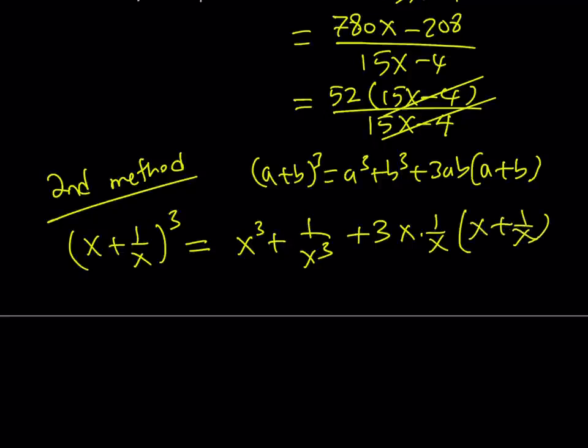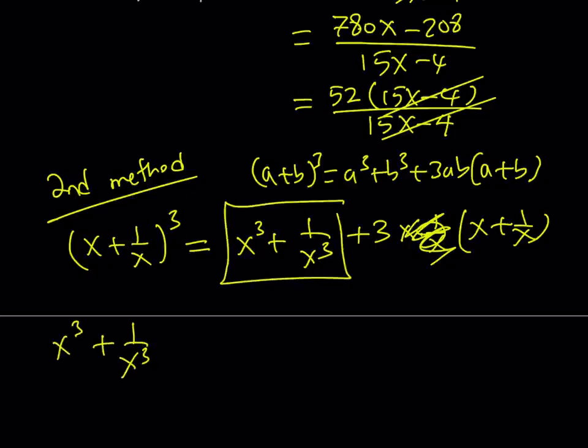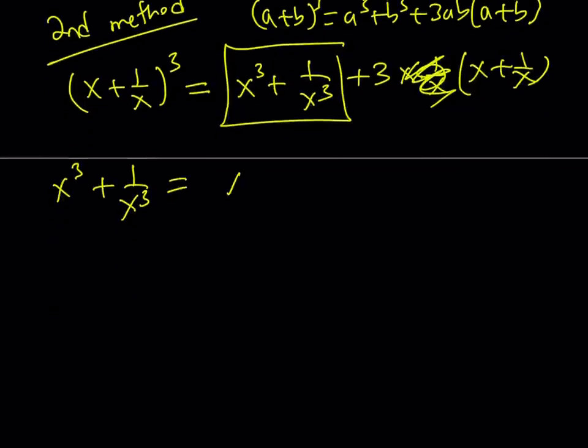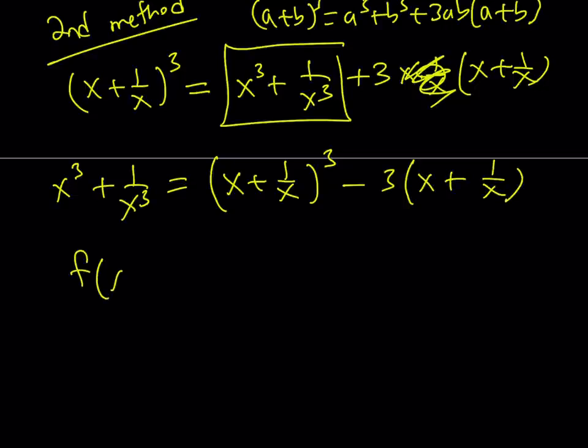But x times 1 over x is equal to 1. So I can totally forget about that. And from here, my goal is to isolate x cubed plus 1 over x cubed. I can basically write it as the quantity x plus 1 over x cubed minus 3 times x plus 1 over x. Now you got to remember that this expression on the left hand side is equal to f of x plus 1 over x. So I kind of get this equation from here, which is really, really cool.